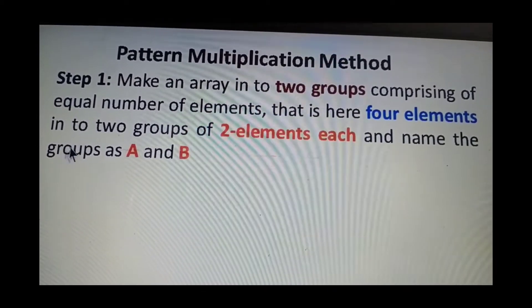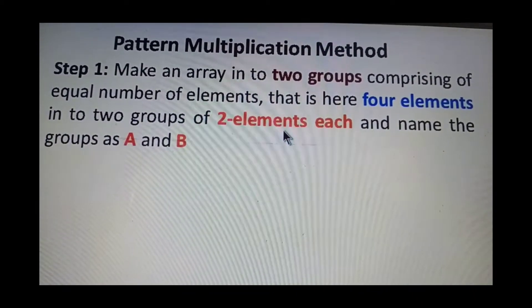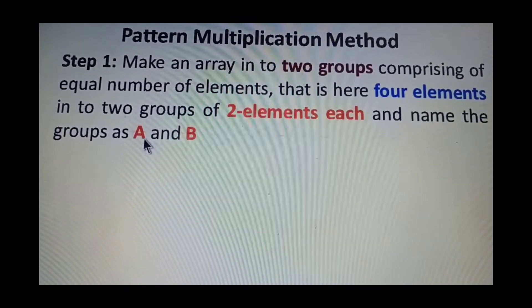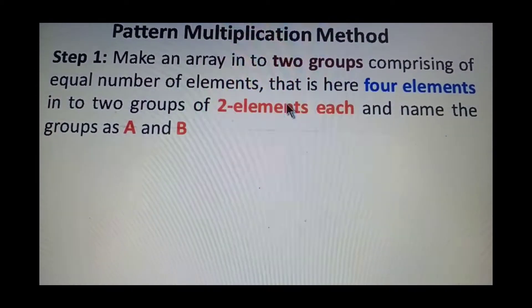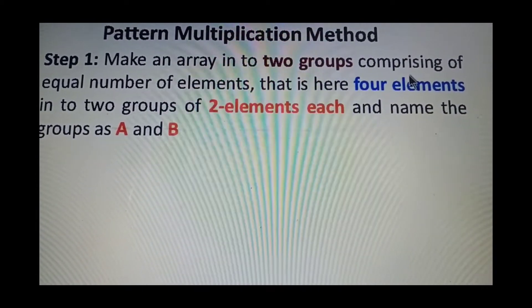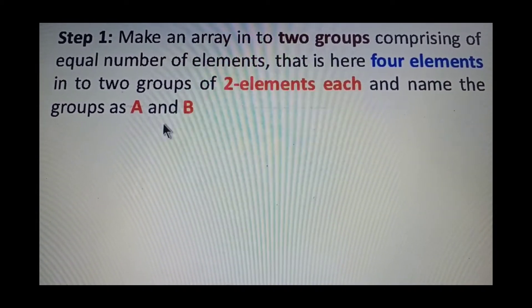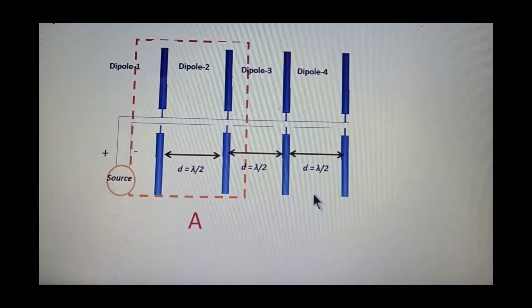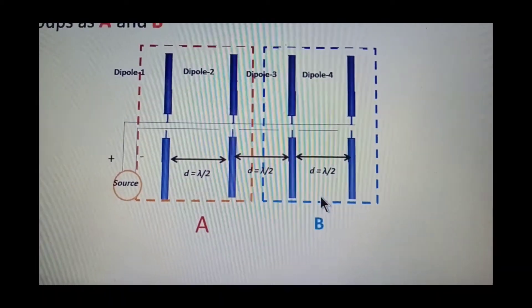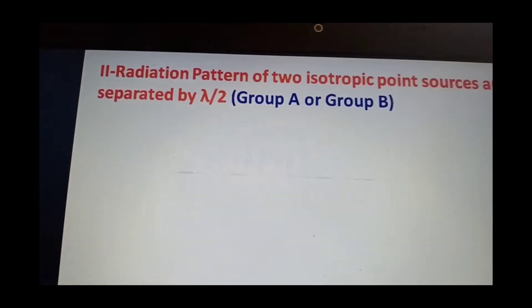In the pattern multiplication method, we first group the available array of four point sources into two groups named A and B. In the four-element array, the first and second dipoles form one group, and the third and fourth dipoles form another group. Group A consists of elements one and two, and group B consists of elements three and four. This process is called separation and grouping.